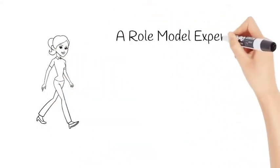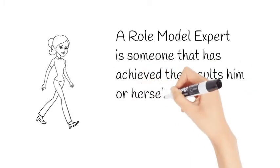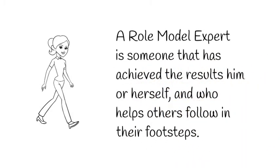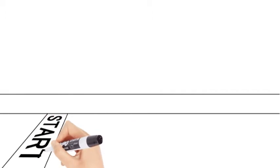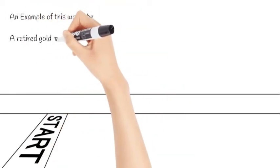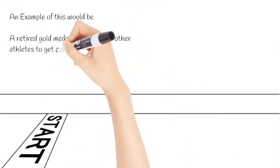A role model expert is someone that has achieved the results, him or herself, and who helps others follow in their footsteps. An example of this would be a retired gold medallist who trains other athletes to get a gold medal.